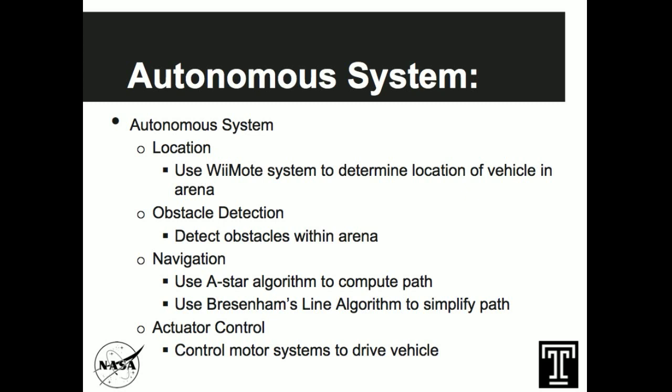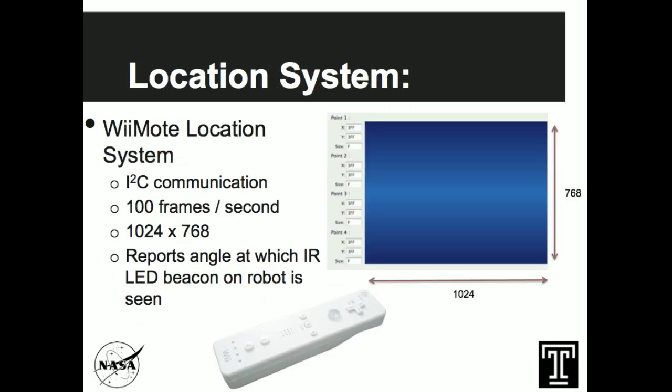Specifically, what I'm going to be talking about in this presentation is our location system and how we are using the Nintendo Wiimotes to locate a beacon in the arena. The Wiimote uses I2C communication and has a 1024x768 resolution. It reports the XY position and size, which is generally some measure of intensity, of the four brightest infrared points of light that the infrared camera can see.